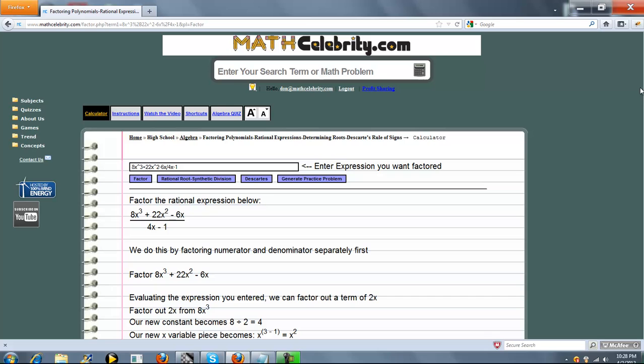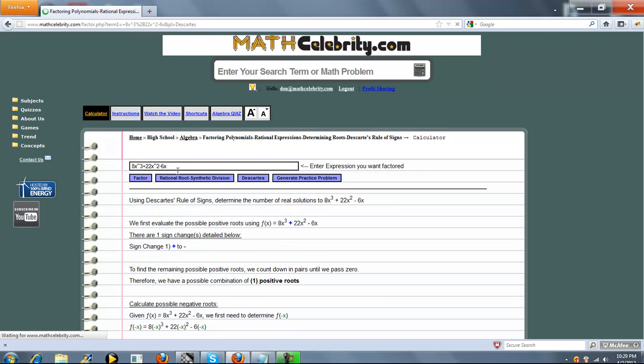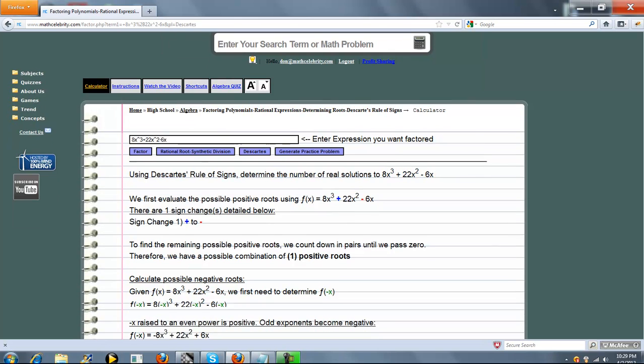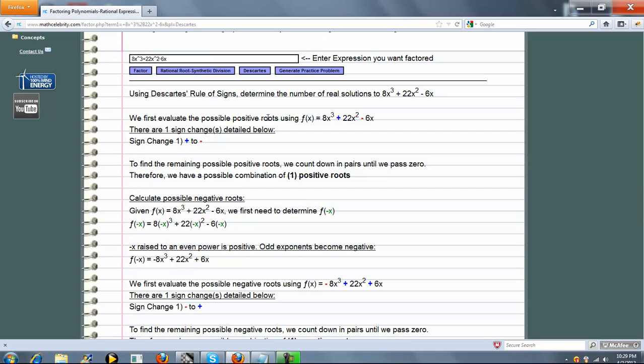Now I'm going to show you the Descartes button. You enter your polynomial, non-fractional of course, and we want to use the rule of signs to determine a number of real solutions to this polynomial. We're going to first evaluate the possible positive roots. There's one sign change from positive to negative. We calculate the sign changes and we have one positive root.